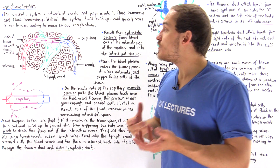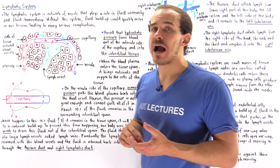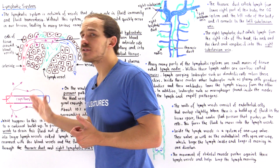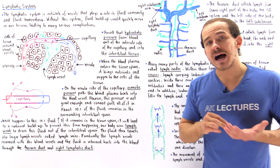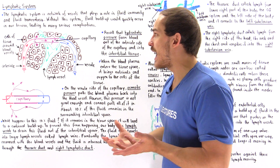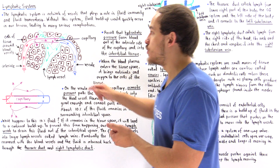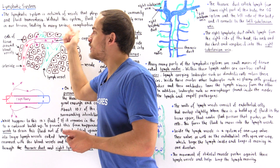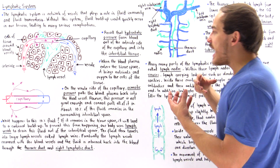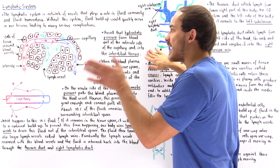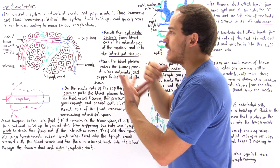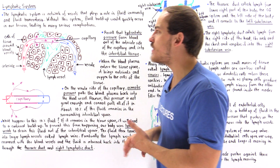Let's recall how the exchange of nutrients and waste products takes place within our capillary. On the arterial side of the capillary, we have a higher hydrostatic pressure than osmotic pressure. That is why hydrostatic pressure is able to force the blood plasma — containing nutrients and oxygen — from the capillary and into the surrounding tissue space, known as the interstitial tissue. This brings nutrients such as glucose, fats, amino acids, and oxygen to the cells of that surrounding tissue.